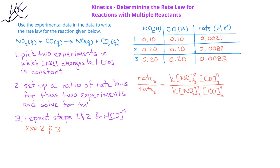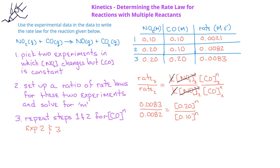We set up the ratio of the rate laws, so we have the rate in the third experiment divided by the rate in the second experiment. We then set up the ratio for the K, concentration of NO2, and concentration of CO terms. So we get K times the concentration of NO2 squared times the concentration of CO to the n power in the numerator, and K times the concentration of NO2 squared times the concentration of CO to the n power in the denominator. In this case, the K's cancel, and since we have the same concentration for NO2, those terms cancel as well. If we look at the rates, they're essentially the same. So when we simplify the equation, we end up with 1 equals 2 to the n power. By inspection, we should note that anything to the zero power is 1, so the value of n in this case is 0.